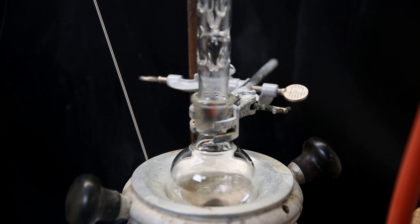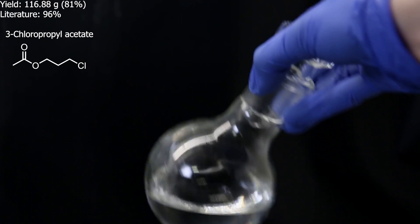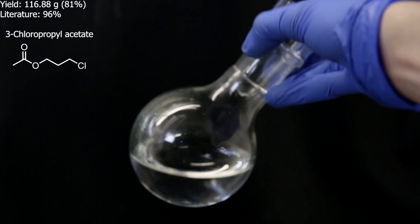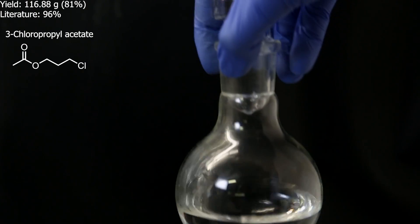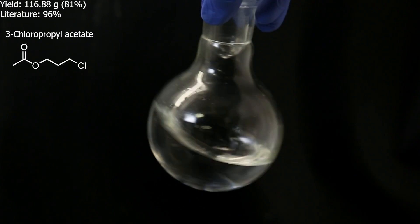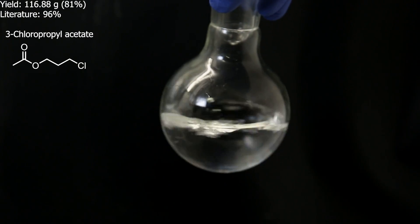I also fractionally distilled the previous distillate, to get out all of the product which got into it. And in the end, I am left with 116.88 grams of 3-chloropropyl acetate, as a clear liquid, which is a yield of 81%. It's a little lower than literature, but it's still okay. And I will immediately use it for the next step.